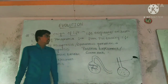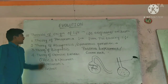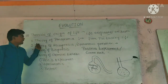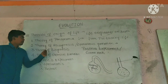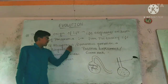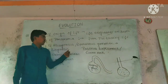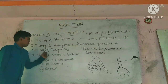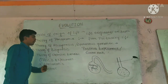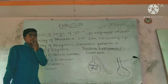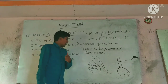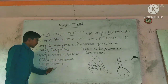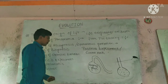In this video, we have learned the theories of origin of life: the Theory of Panspermia, the Theory of Abiogenesis also called Spontaneous Generation, and the Theory of Biogenesis. We also learned three experiments: Redi's experiment, Spallanzani's experiment, and Pasteur's experiment. Thank you.